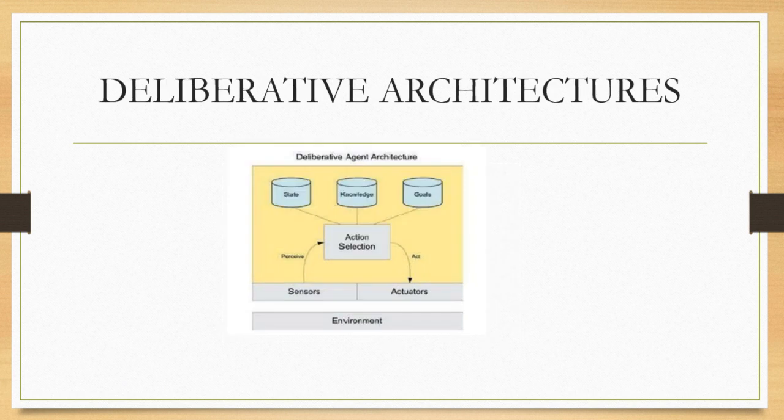Next is deliberative architecture. Deliberative implies deliberation over the action to perform given a current set of inputs. It can solve all complex problems using a variety of mechanisms including production systems, neural networks, or other intelligent algorithms.